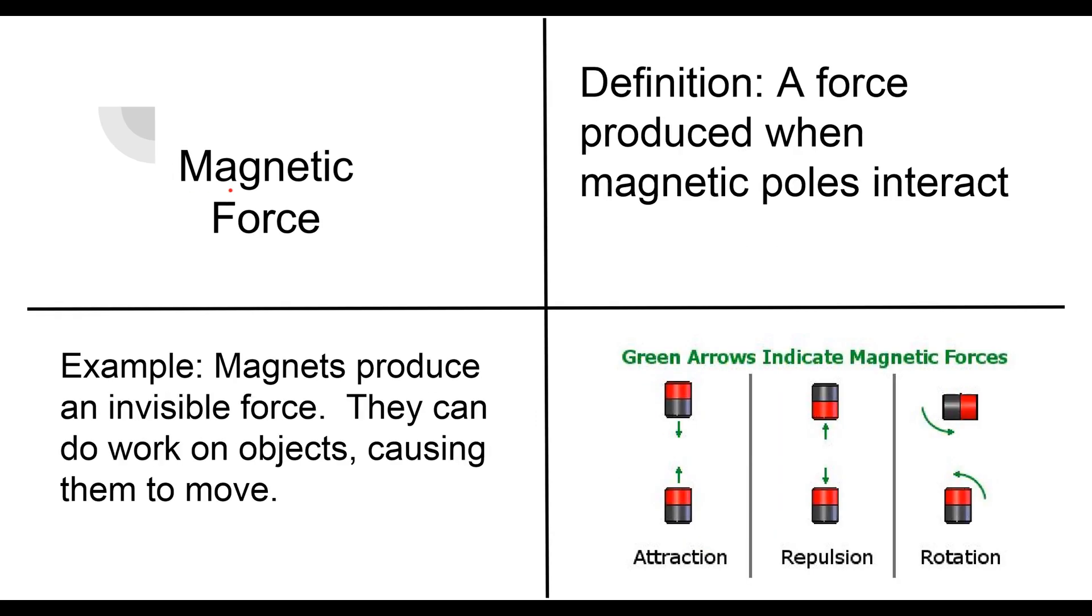Our final word is going to be magnetic force. So our definition is a force produced when magnetic poles interact. So our example is magnets produce an invisible force. They can do work on objects causing them to move.